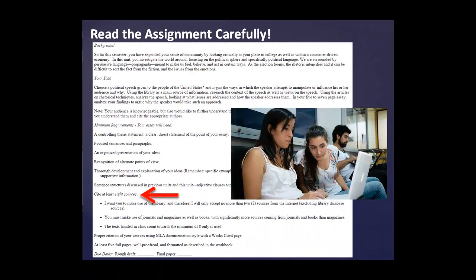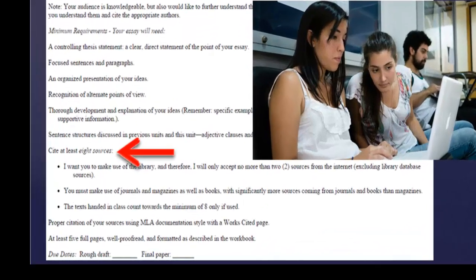The best place to start with determining what kind of information you will need is with your assignment instructions. You may have received a copy of the assignment in class or it may be available on your coursework site. Read through the assignment several times to make sure you understand what it is you are expected to do. The type of information you need will depend on the specific problem or assignment you've been given.